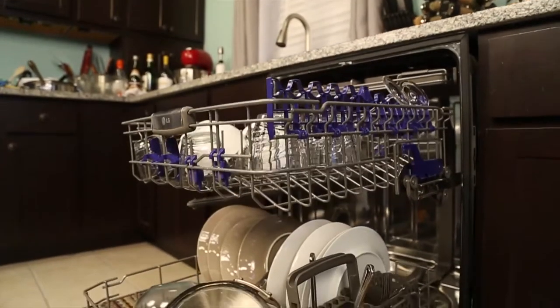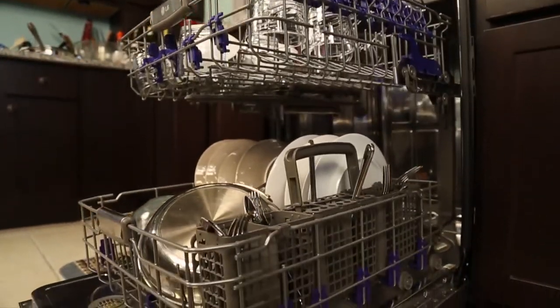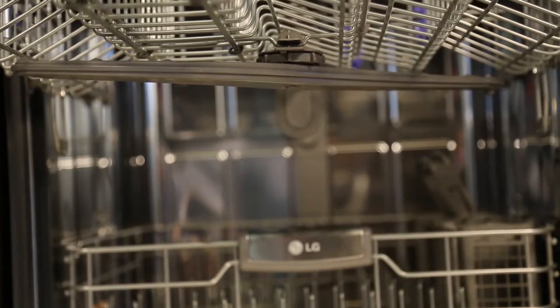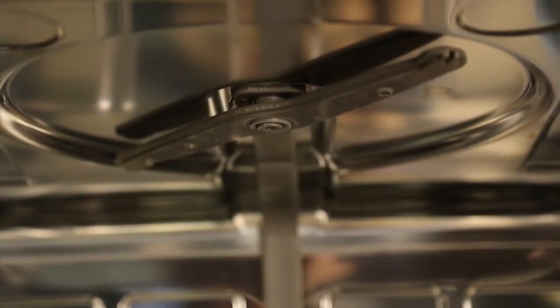There are three spray arms located inside of your LG dishwasher. The lower spray arm is located under the lower rack. The upper spray arm is located under the upper rack. The top spray arm is located above the cutlery rack.